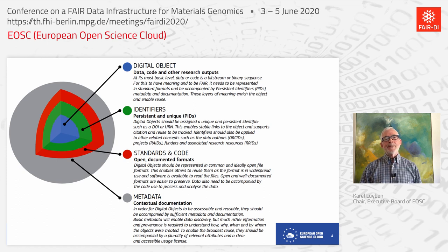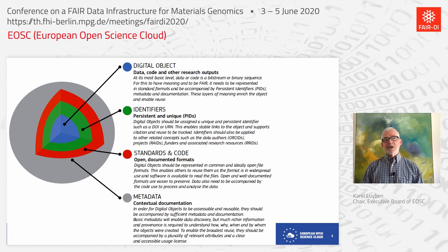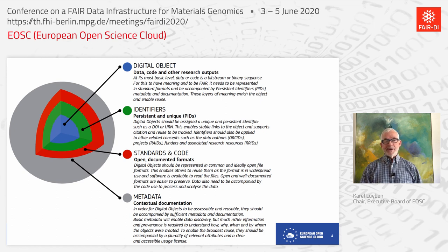When I use the word data, I do not only mean classical data and numbers — I mean basically any digital object or set of digital objects: data, code, other research outputs like publications, etc. These data should have identifiers, sometimes called GUPRIs — global, unique, persistent, resolvable identifiers — or PIDs, persistent identifiers that are unique. Standards and codes are needed to make data open and documented, and last but not least, metadata describing what the dataset holds, what it is for, when it can be used, how it was created.